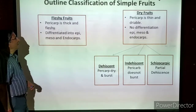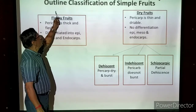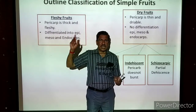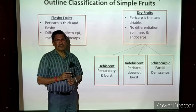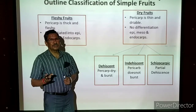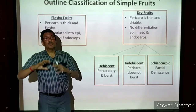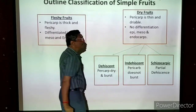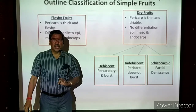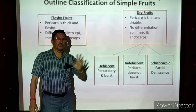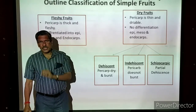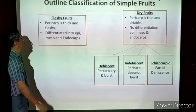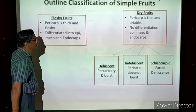Now we are coming to another type of classification — the outline classification of simple fruits. In the first slide, we have taken three types of fruits: simple fruits, aggregate fruits, and multiple fruits. We are going to take each one separately. Now we are taking simple fruits. The ovary wall develops into the fruit wall, and the fertilized ovules develop into seeds — such fruits are called simple fruits.